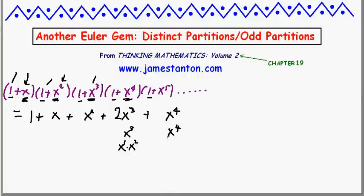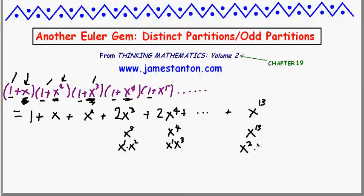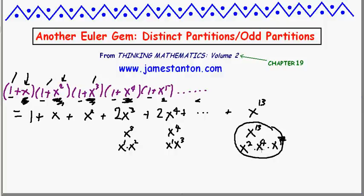For x⁴, we can get it by choosing x⁴ directly, or by choosing x¹ from the first parentheses and x³ from the third — so again two ways. And for x¹³, we could choose x¹³ directly, or something like x² · x⁴ · x⁷, and so on. In fact, expanding this product encapsulates all the ways to break down each number N into distinct parts — each coefficient is D(N). This is the generating function that gives us D(N).